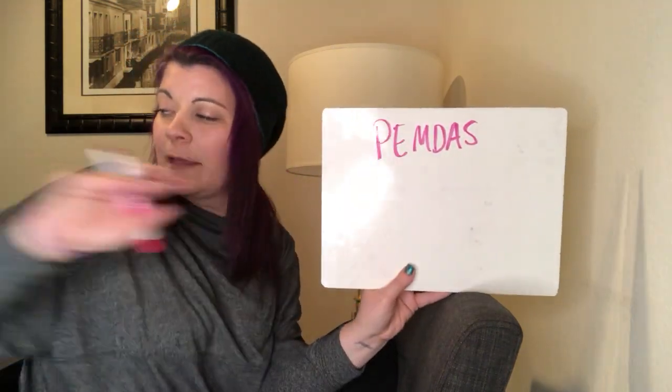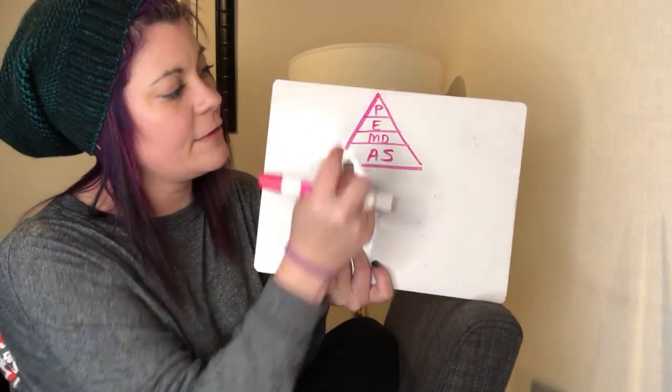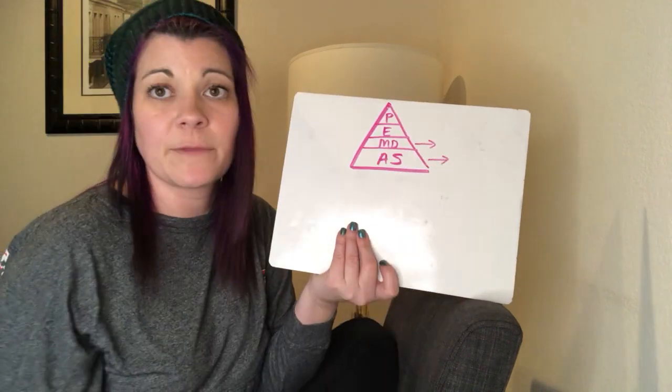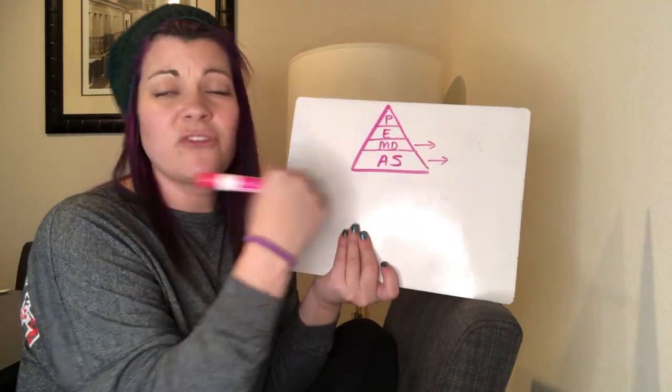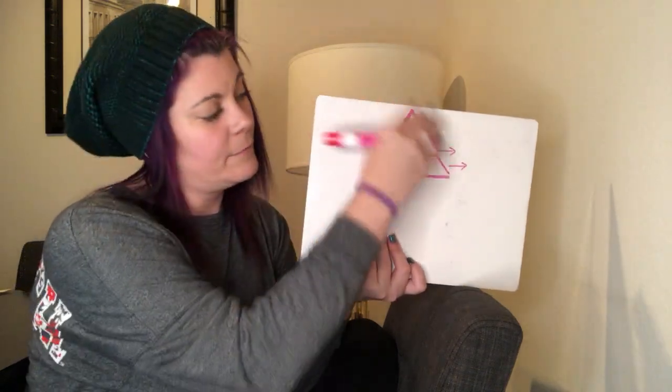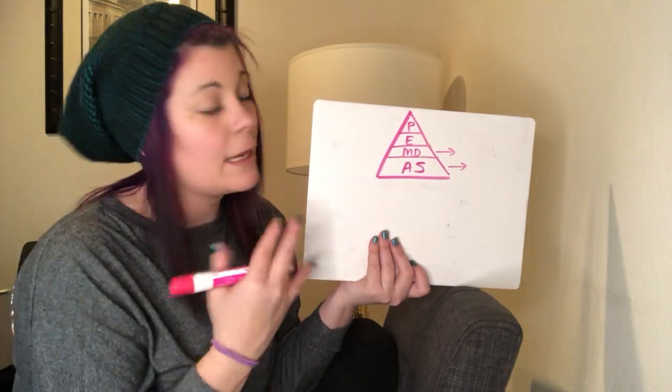I'm going to show you a different way to write PEMDAS because a lot of people get confused and say multiplication comes before division, but that's not true. You do multiplication and division left to right. So I like to write it in a pyramid form. That way you can see that multiplication and division are on the same level. Parentheses comes first, then exponents, then multiplication and division from left to right, and addition and subtraction from left to right. This reminds you that they're on the same level of the pyramid — you just have to do them from left to right.